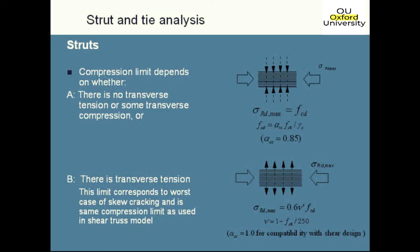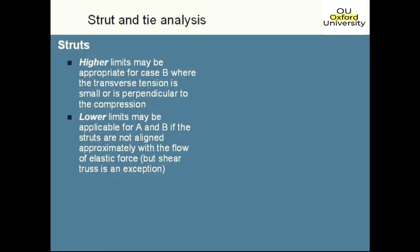The second strut limit is somewhat conservative. Although shown with orthogonal tension, the worst case is actually skew tension where compression must pass across skewed cracks. If cracks run parallel to the compression strut it's less severe. The Eurocode says you can use a less conservative value for truly orthogonal tension, but doesn't specify what — so in practice you can't use it without going to research or textbooks.